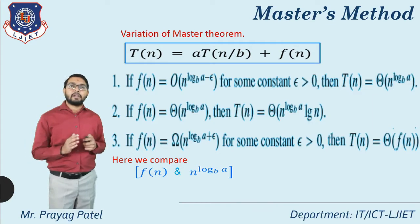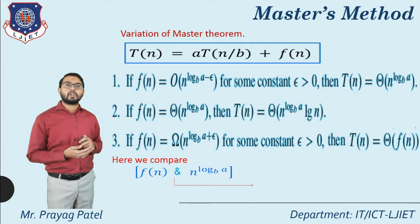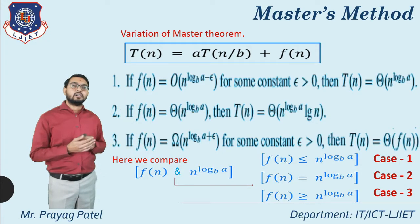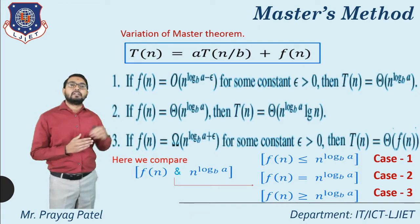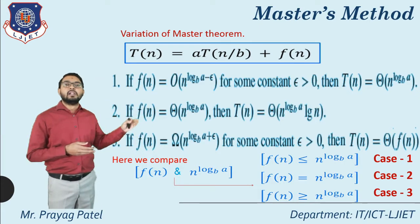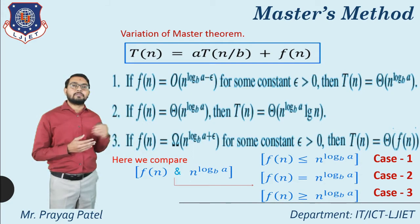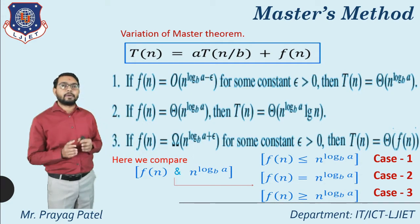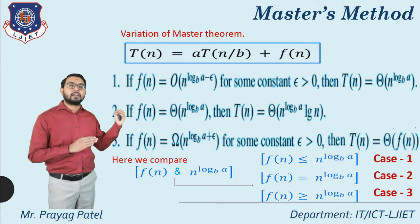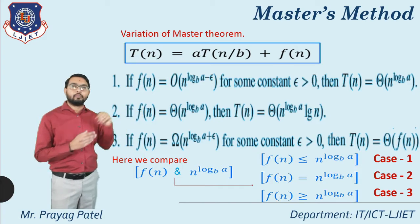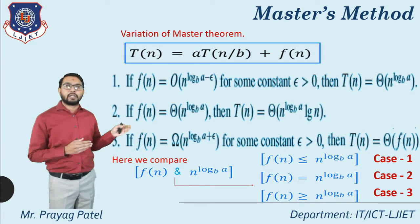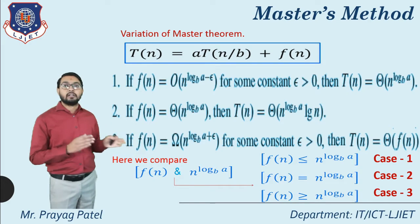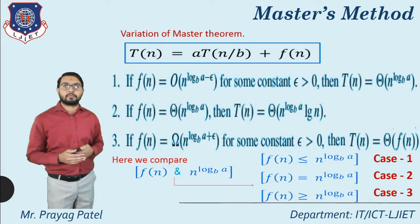Here we compare f(n) with n^(log a base b) and according to this comparison we consider three cases. If f(n) ≤ n^(log a base b), apply case 1. If f(n) = n^(log a base b), apply case 2. If f(n) ≥ n^(log a base b), apply case 3.